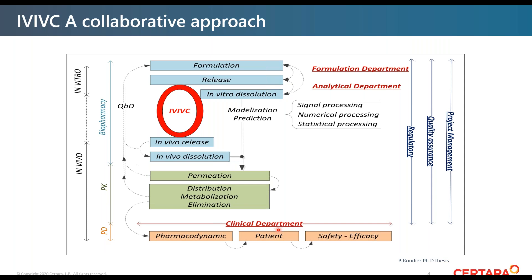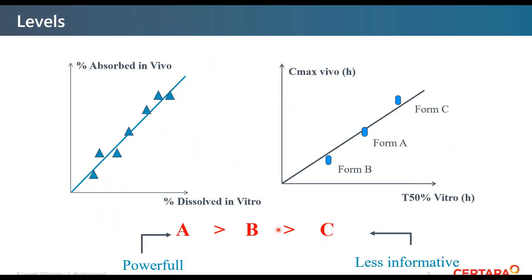IVIVC is something that links data, and you have three levels of IVIVC. The most powerful one is called Level A and the less informative in theory is Level C.